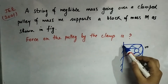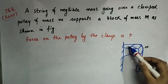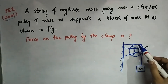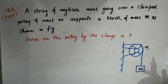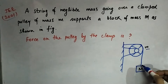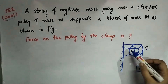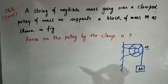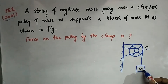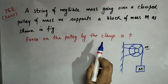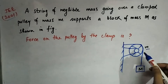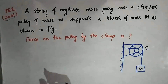We have a string of negligible mass and a pulley of mass m. Now mostly the pulley is massless, but here we have a pulley with mass m, and a block hanging from the string. The block's mass is capital M. We have to find out what force the clamp is applying on the pulley.